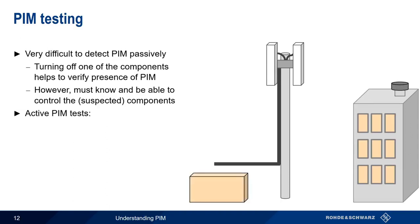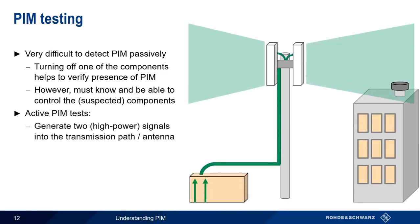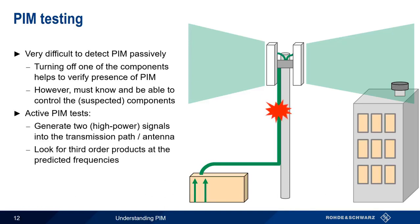A special instrument called a PIM tester is connected to a base station antenna via the transmission line, and two CW tones are injected. The PIM tester knows the frequencies at which third order products would appear given the frequencies of the two tones it's generating. If PIM is being generated either internally within the system or externally, one or both of the third order products will be detected. In a standard PIM test, the third order product is used because it always has the highest amplitude, though higher order products can also cause interference.